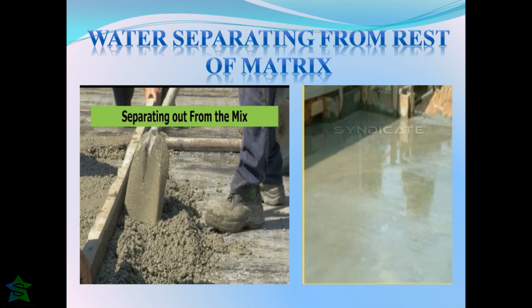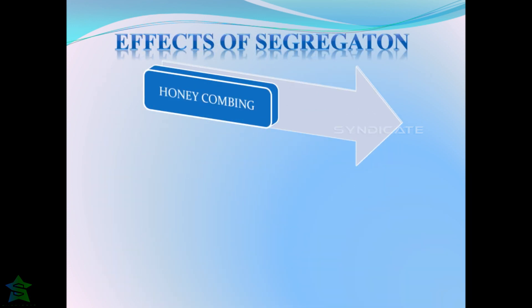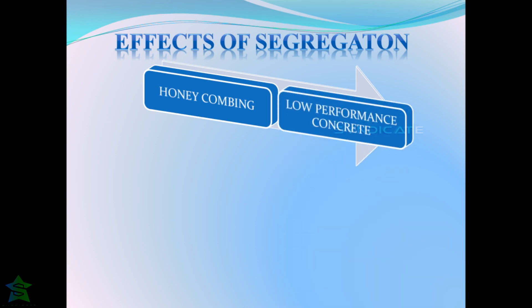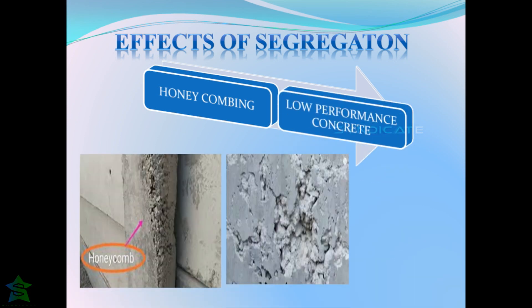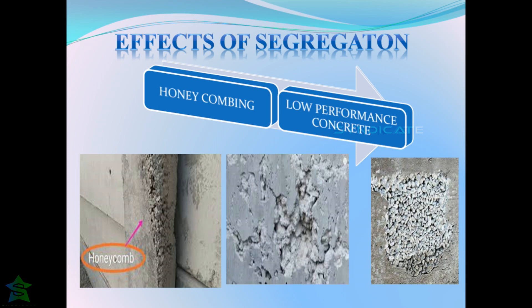This picture evidently shows the third type of segregation, where water settles at the surface of the concrete leaving behind the cement slurry. The segregation factor can be found using uniaxial tensile strength and the heap test. If the segregation factor is closer to unity, it means that the milder is the tendency of segregation.